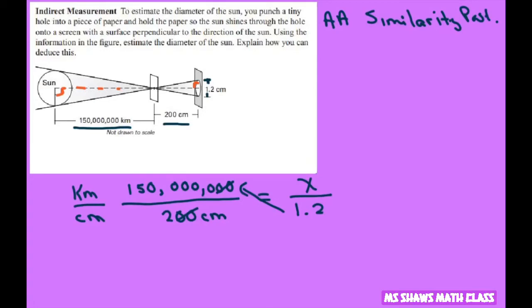So to make it easier in the calculator. So you're going to get 1.2 times 150, 4 zeros. 1, 2, 3, 4. So that's 1,500,000.